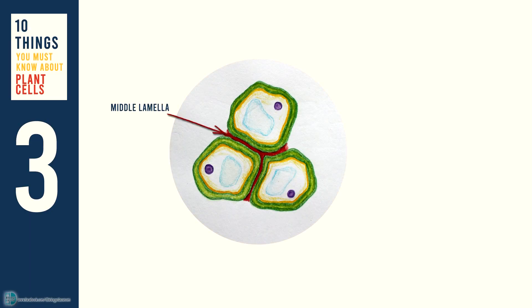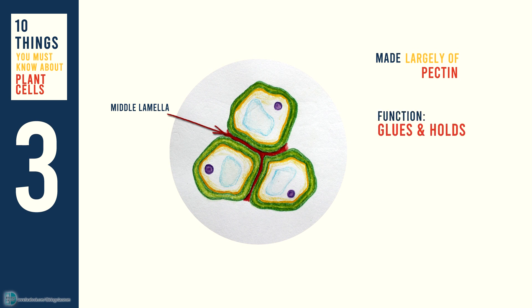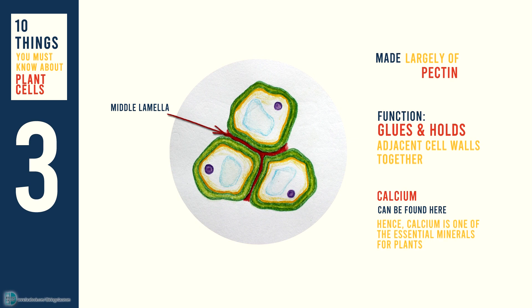Middle lamella is found between plant cells. It is made largely of pectin. It glues and holds the adjacent cell walls together. Calcium is also found here, and this explains why calcium is one of the essential minerals for plants.